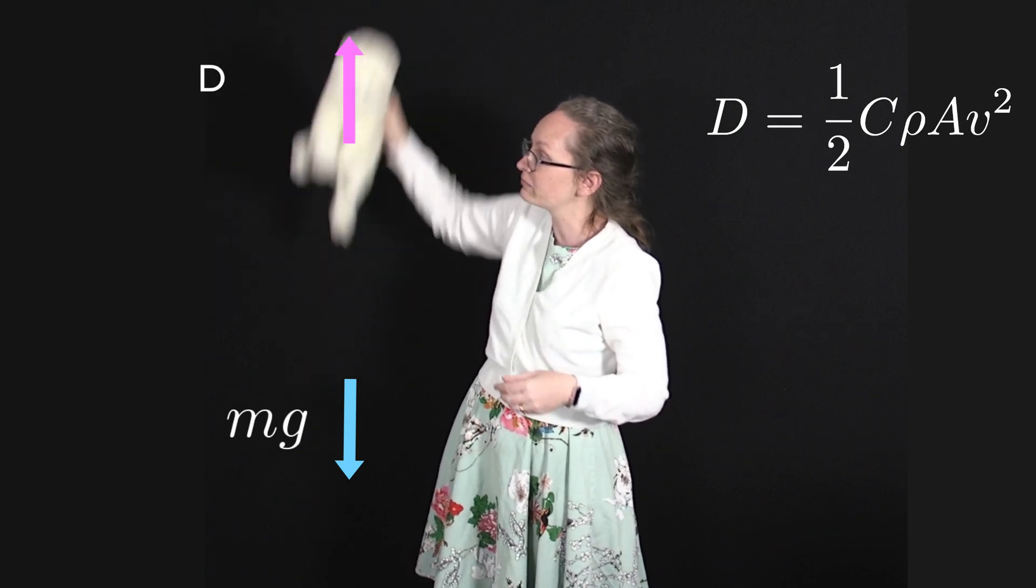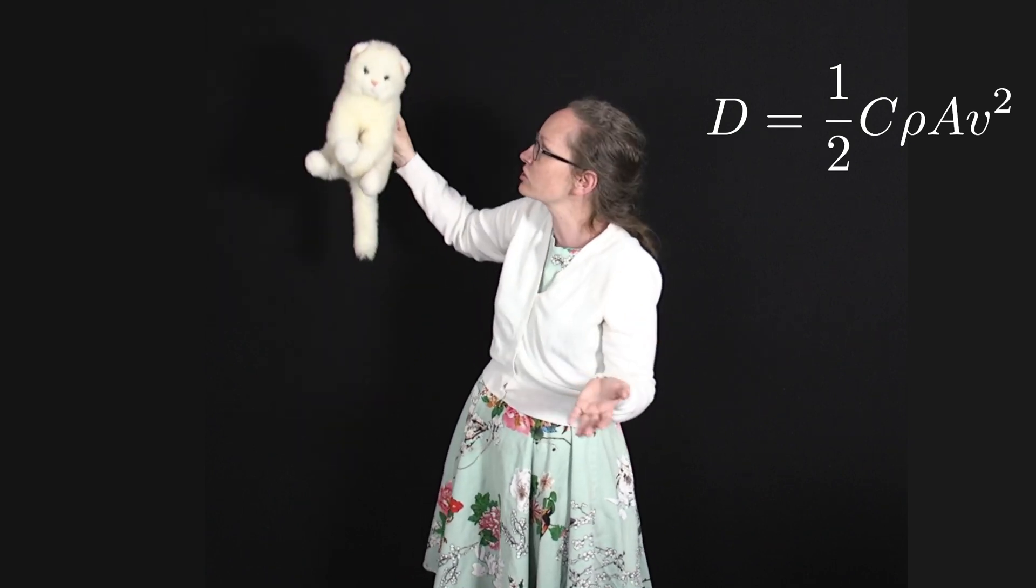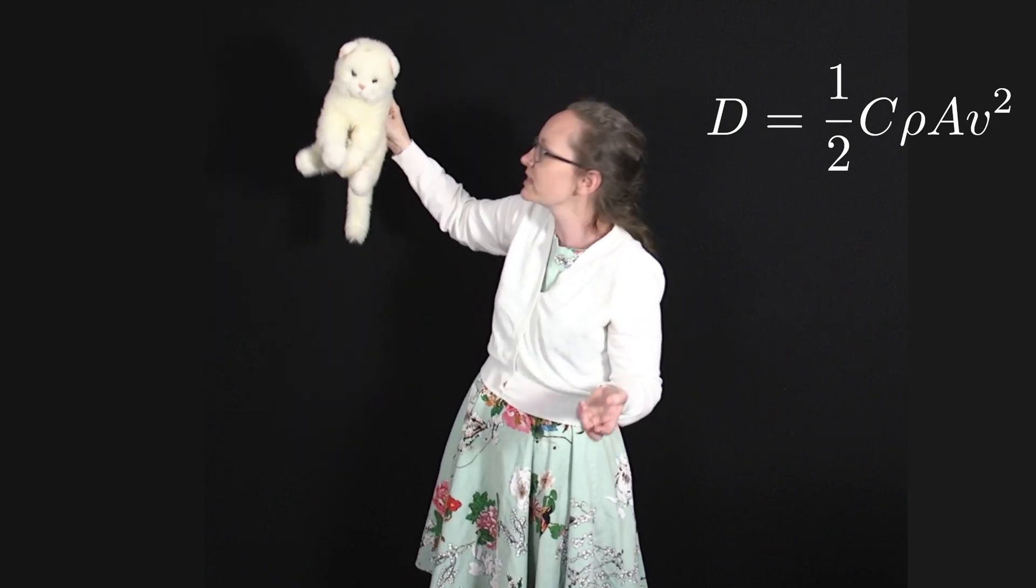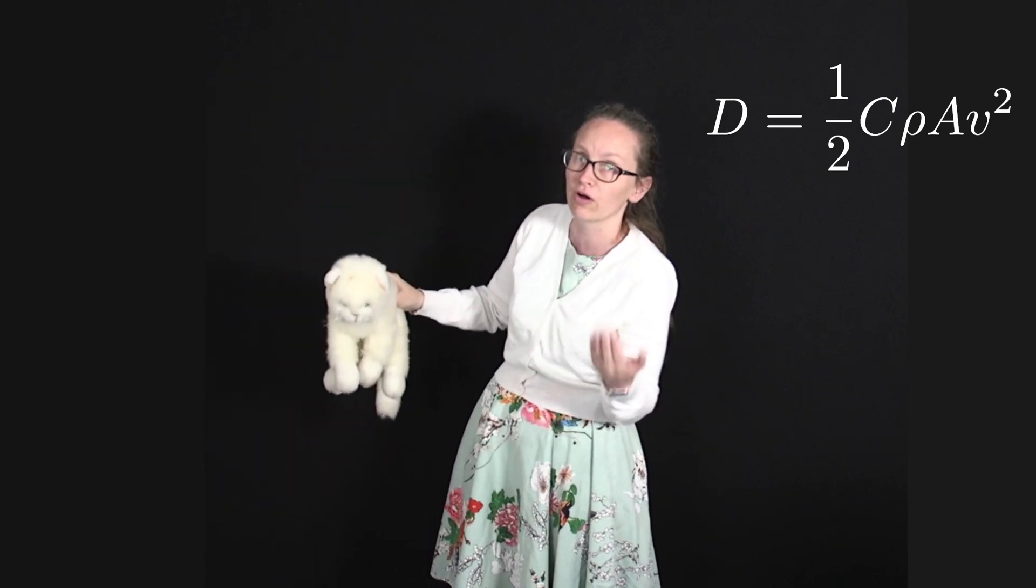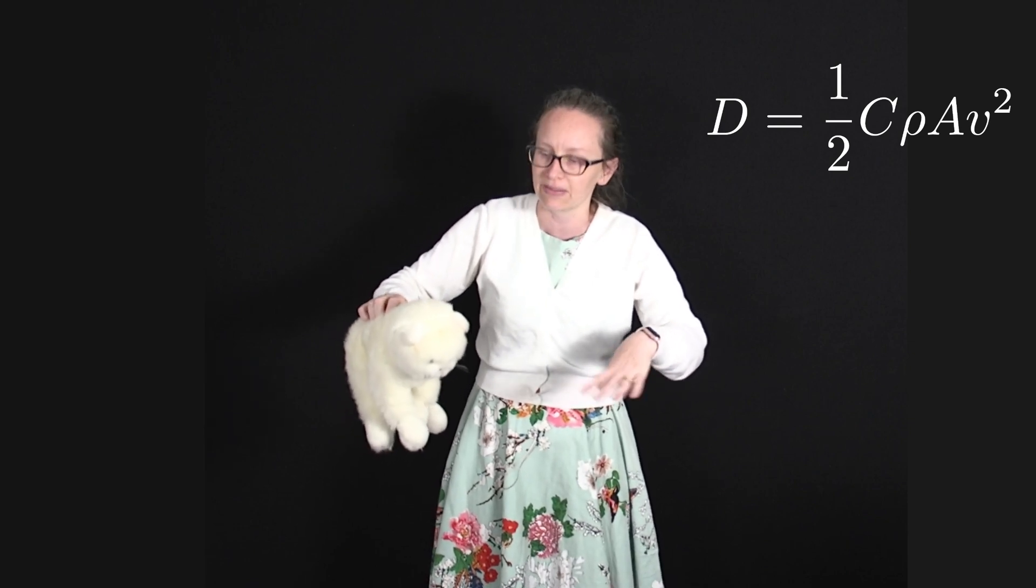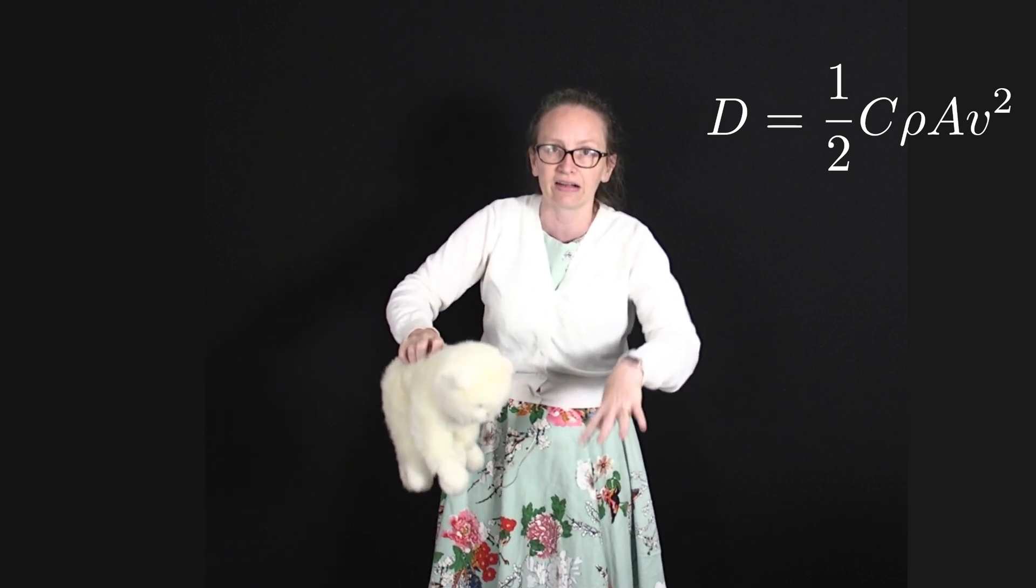Now when a cat falls from a really high floor, it manages to reach its terminal speed. So it's then got more time to prepare itself for landing, so it can relax its muscles a bit and make sure that its legs are below it.